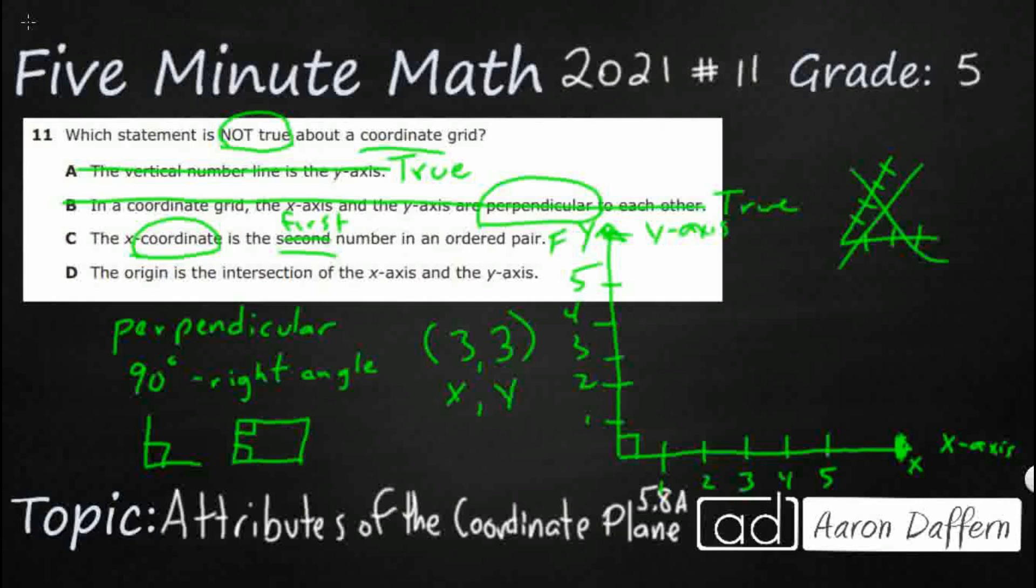Let's double check D. The origin is the intersection of the x-axis and the y-axis right there at 0 comma 0. That is our origin, which means D is correct. We don't want it. And our answer is C.